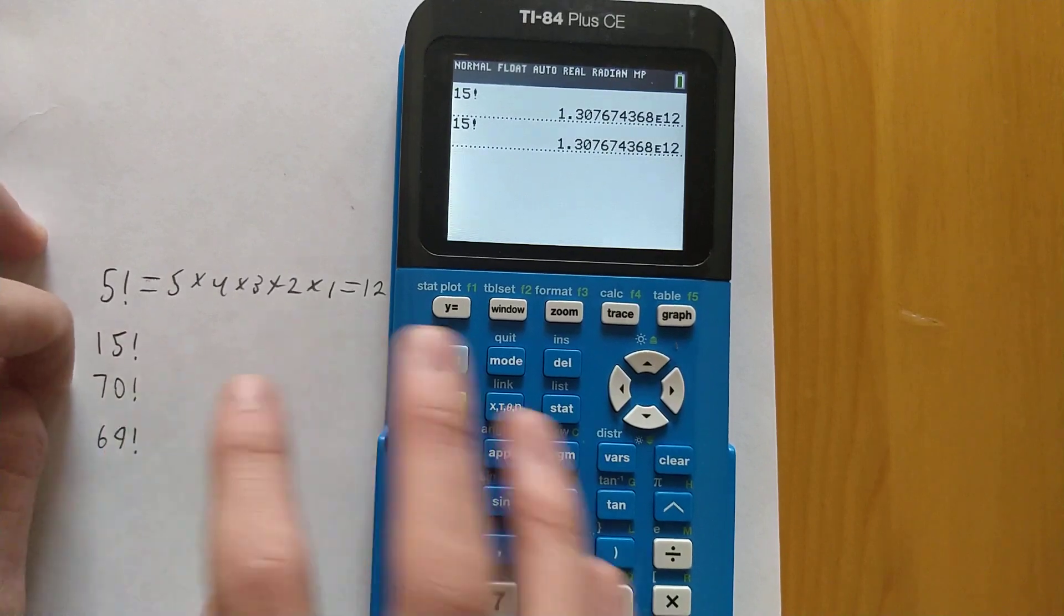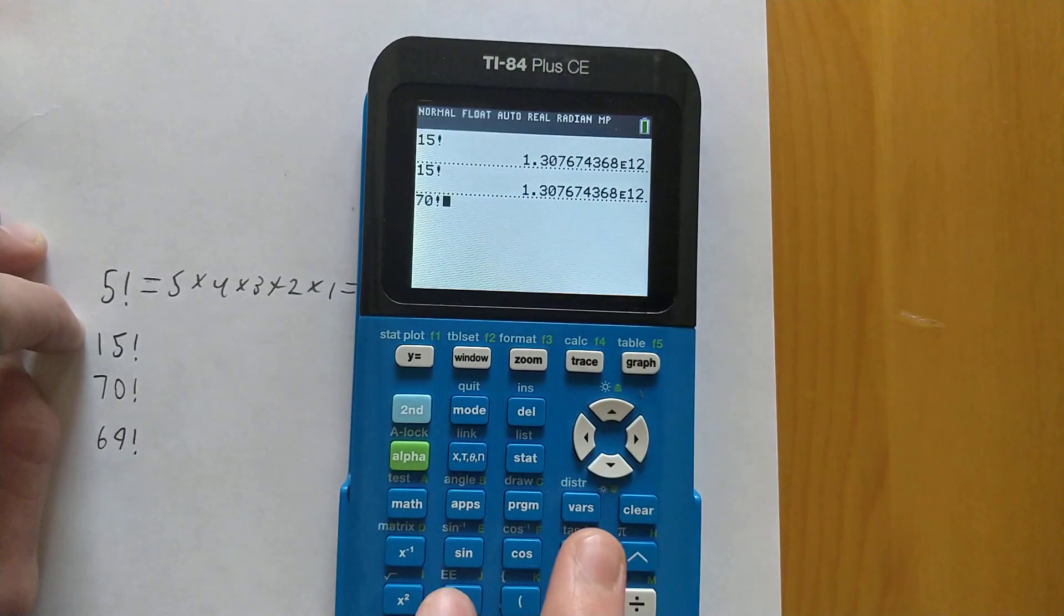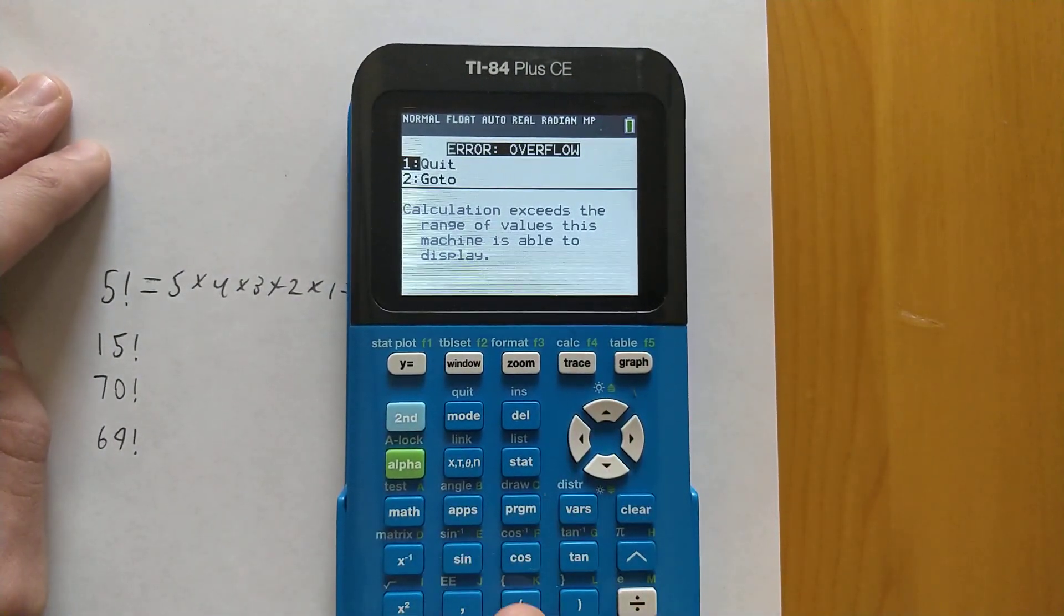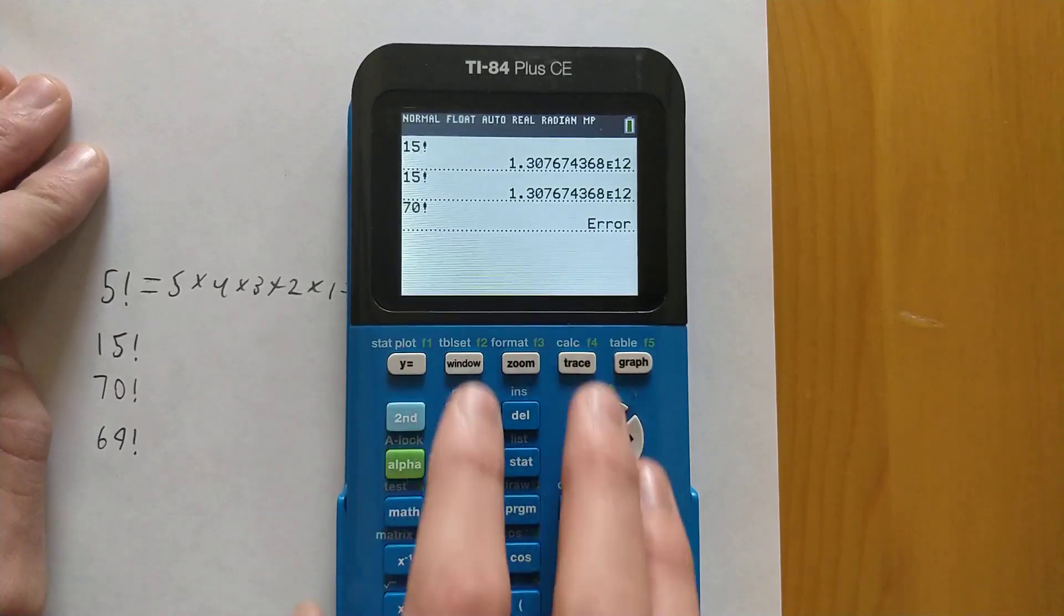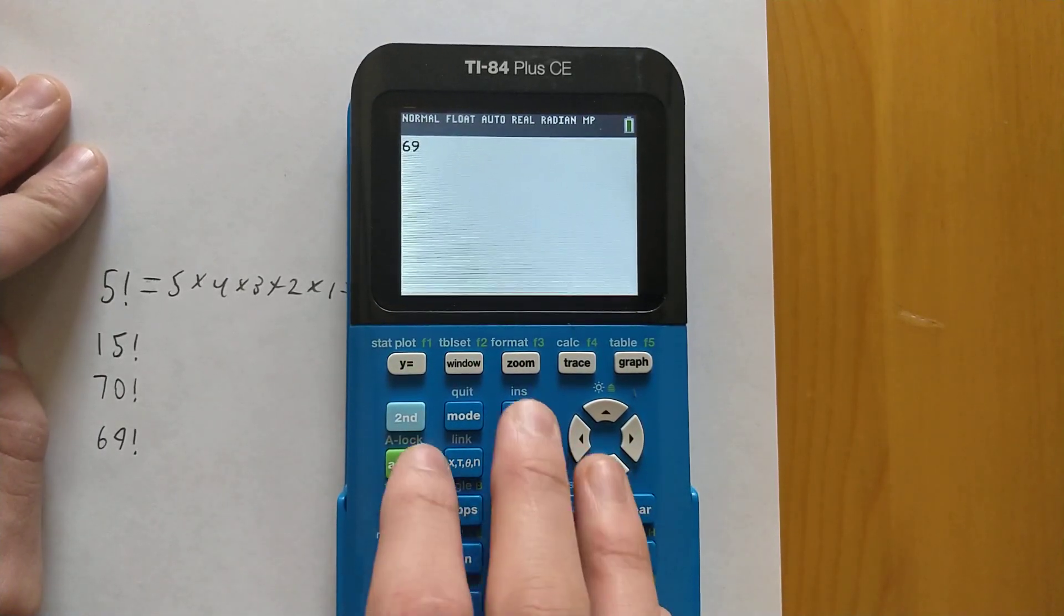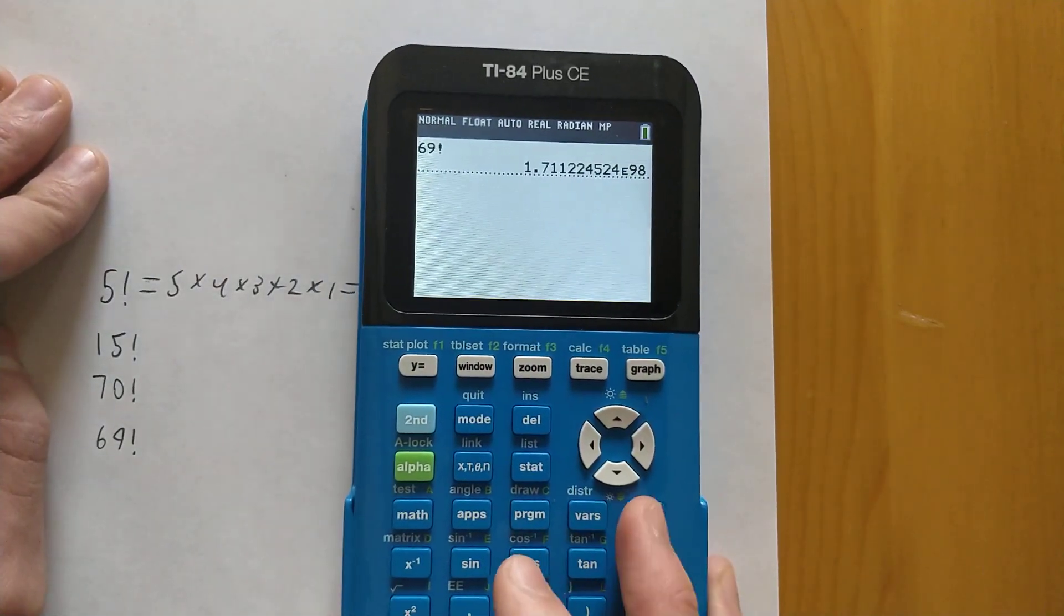So now let's see if we can find the factorial of 70. So if we go 70 factorial, you'll see that it gives us an overflow error. This is because the largest value that we can calculate on the calculator for factorials is actually 69. And if you go anywhere above that, it won't work anymore. The numbers just get too large for the calculator to handle.